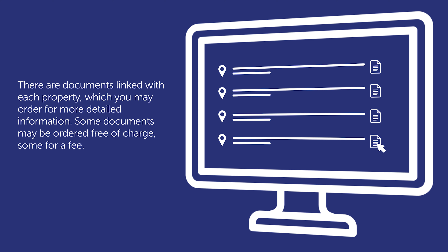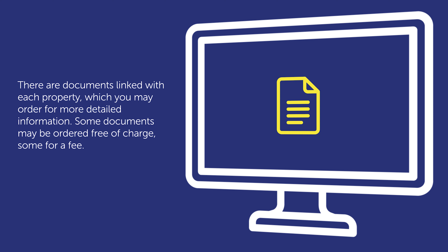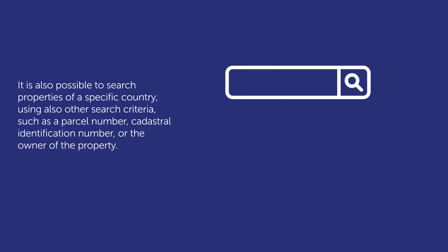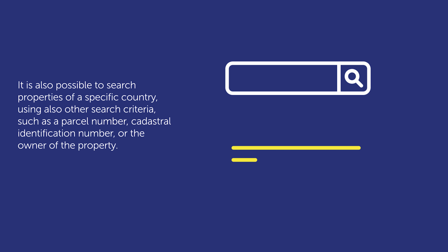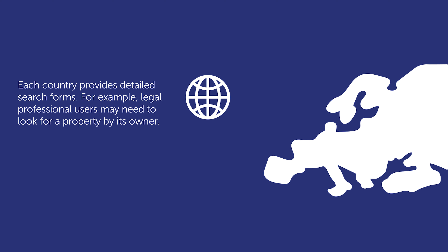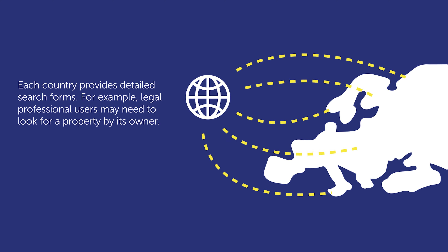There are documents linked with each property, which you may order for more detailed information. Some documents may be ordered free of charge, some for a fee. It is also possible to search properties of a specific country using other search criteria, such as a parcel number, cadastral identification number, or the owner of the property. Each country provides detailed search forms.